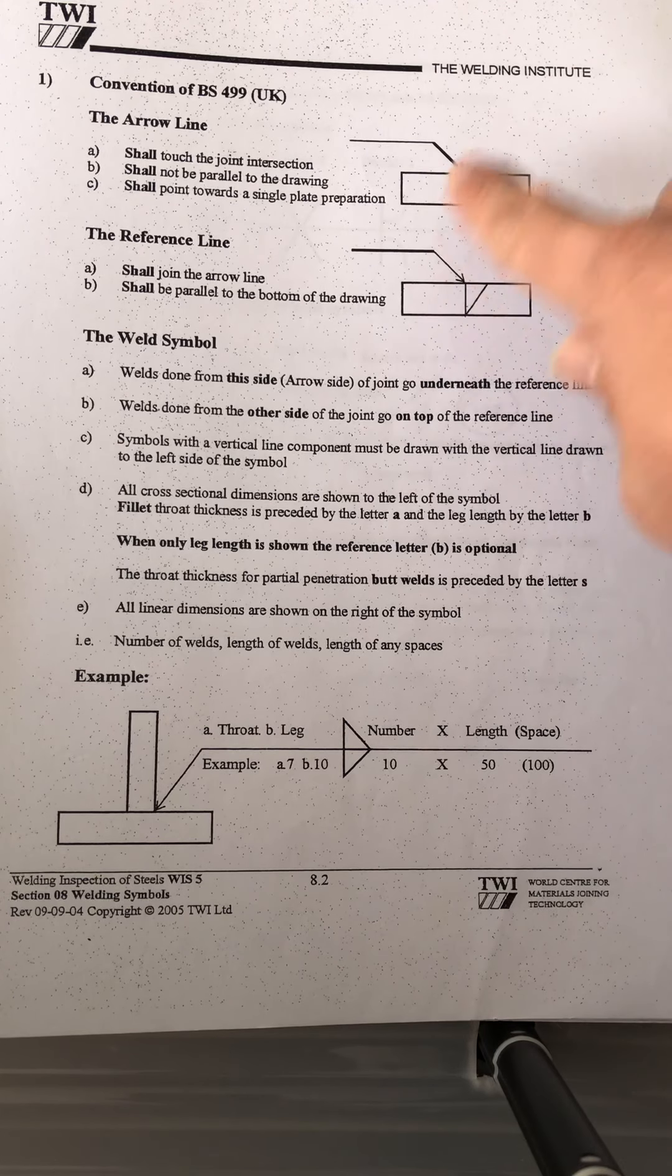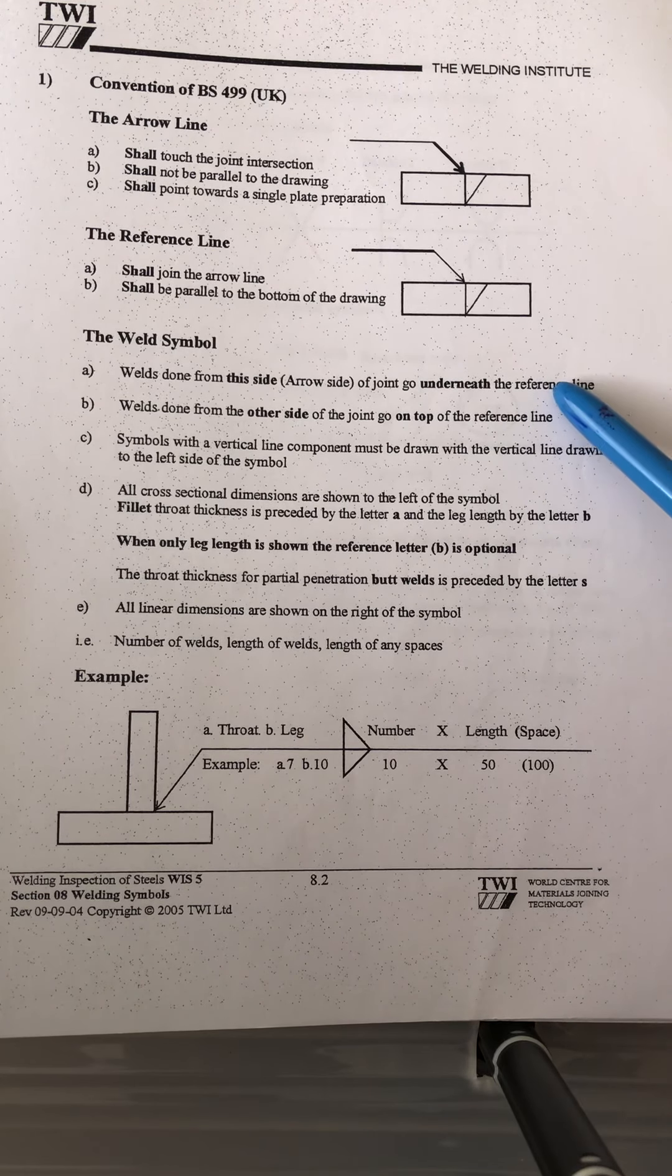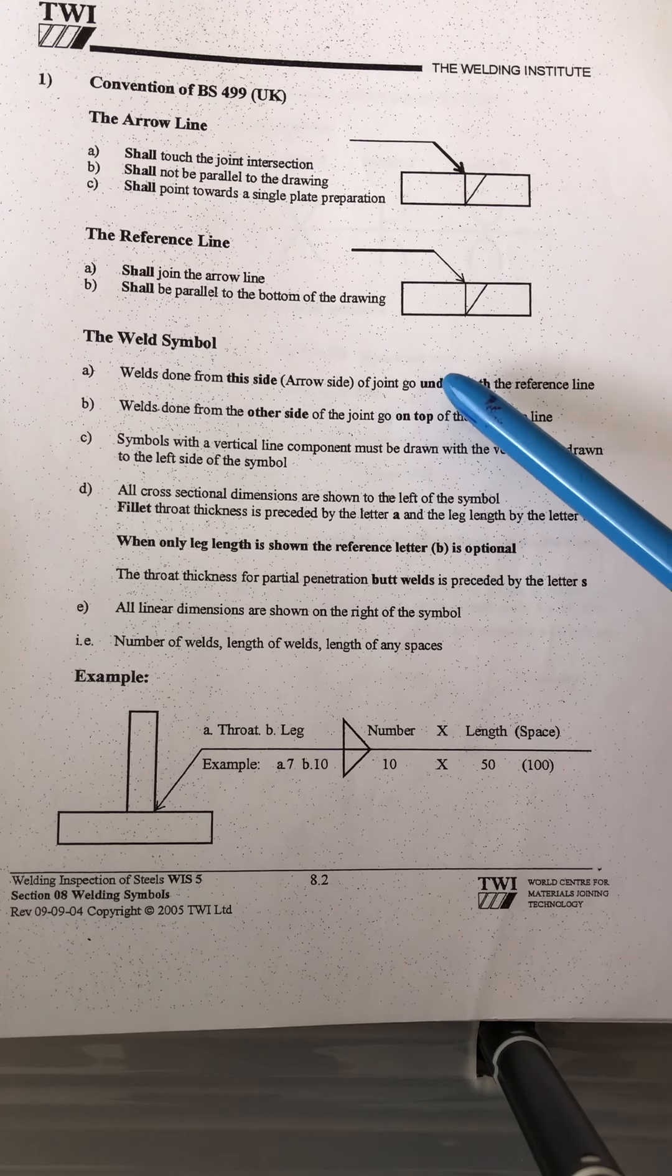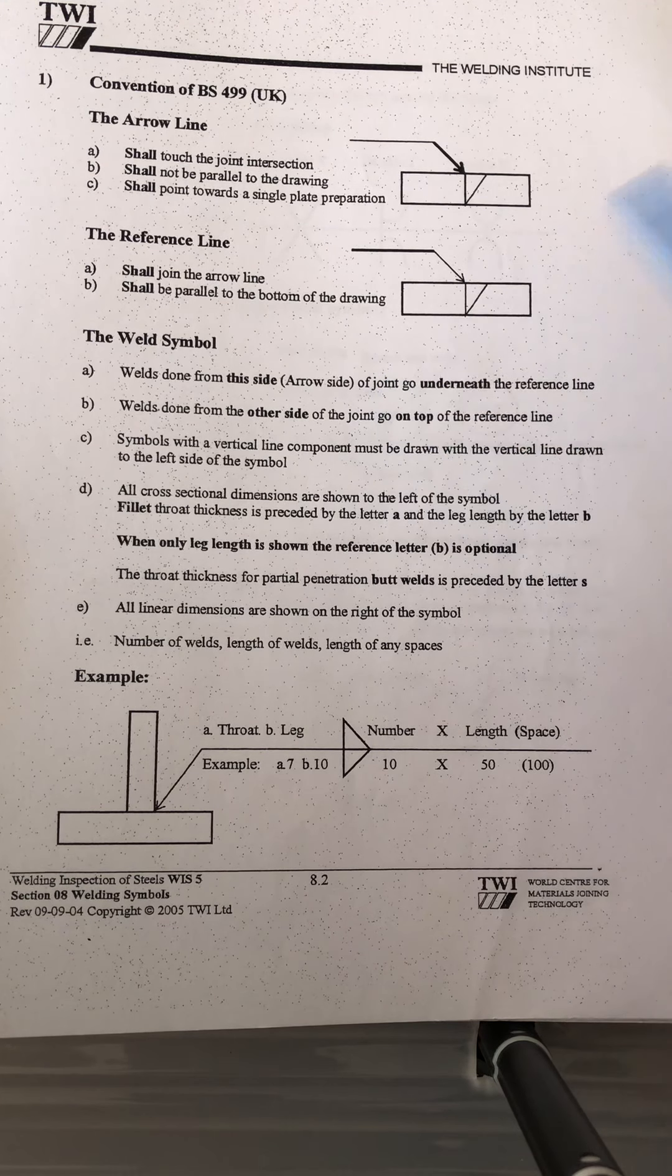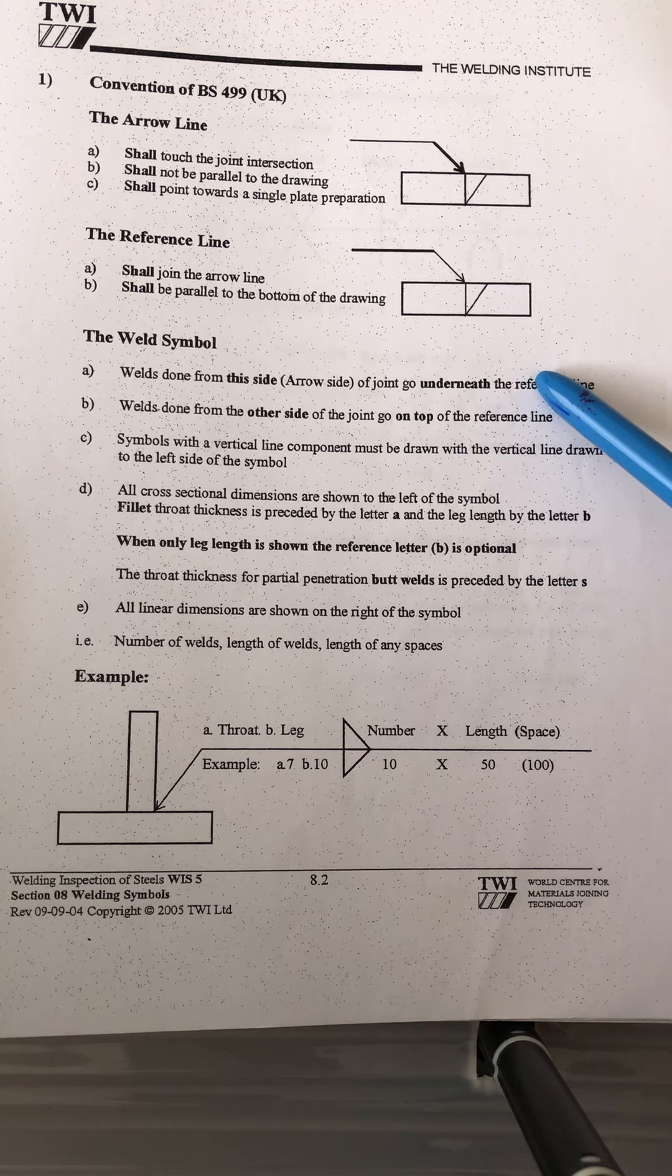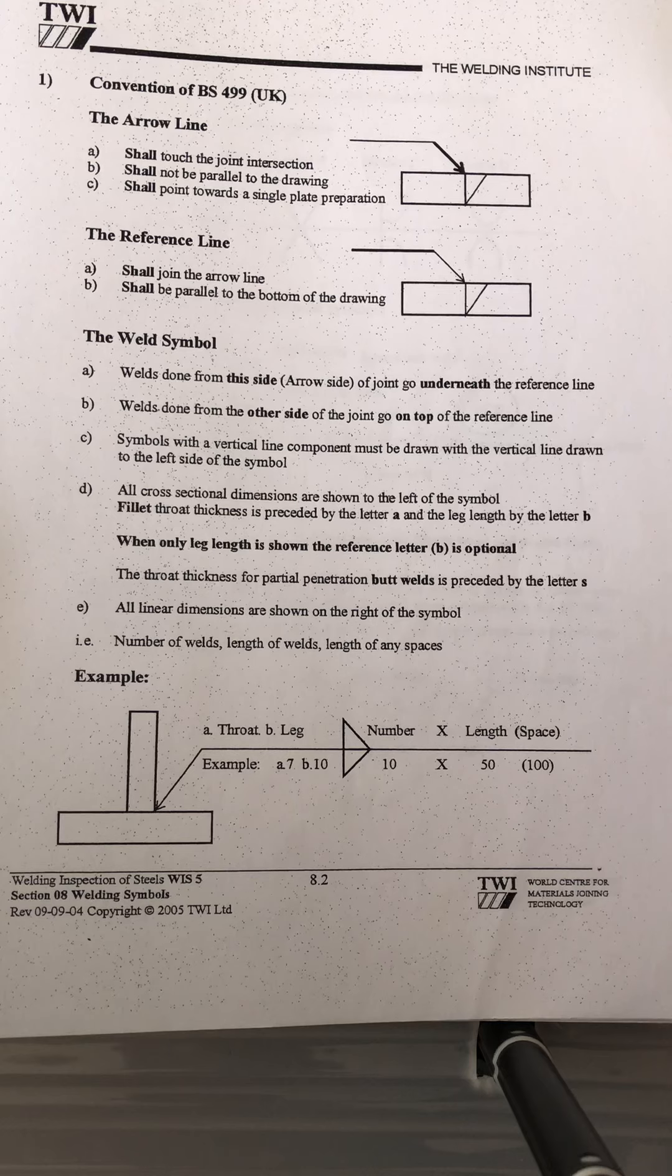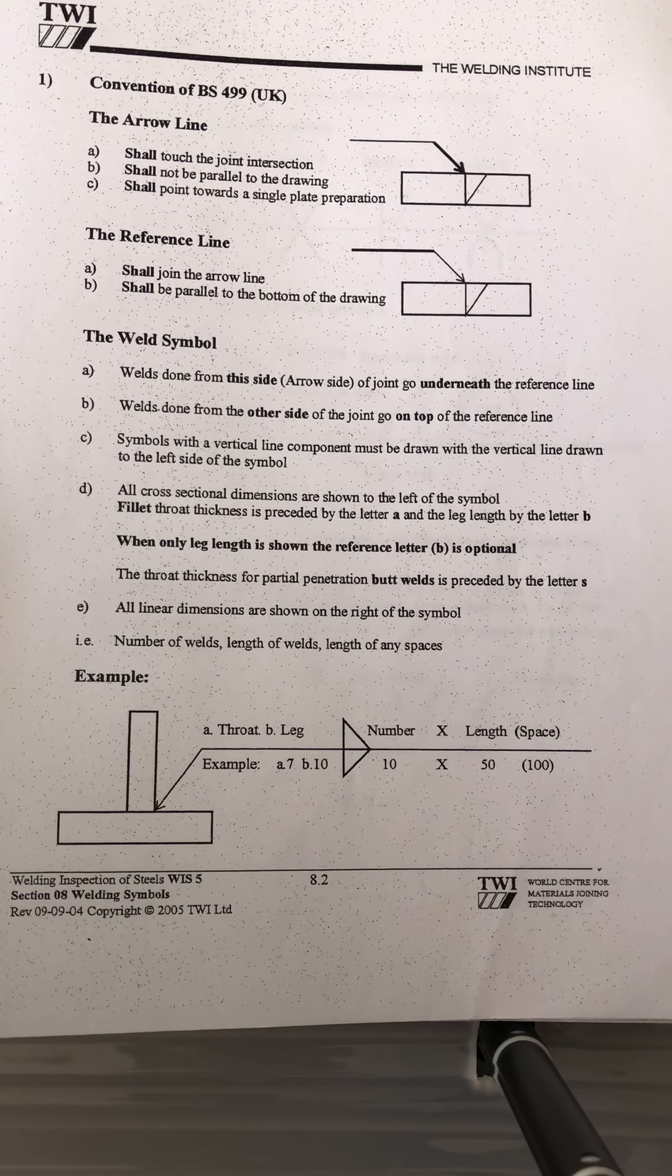When you see the welding symbols, welds done from this side, arrow side, is the underneath of the welding. Welds done from the other side of the joint go on the top of the reference line. The arrow line is mostly on the bottom of the reference line.